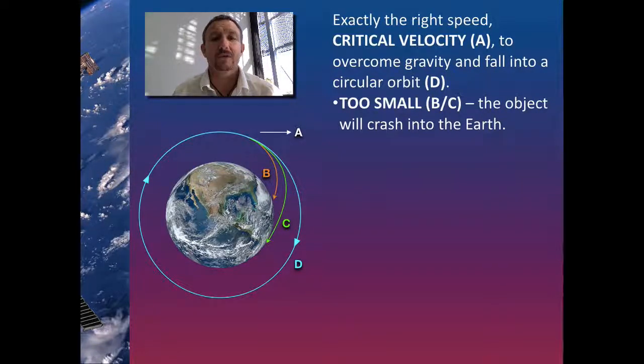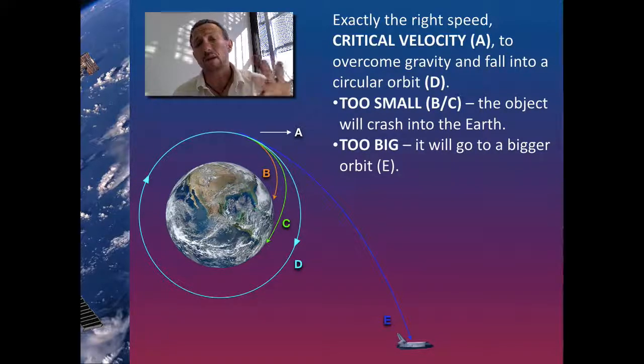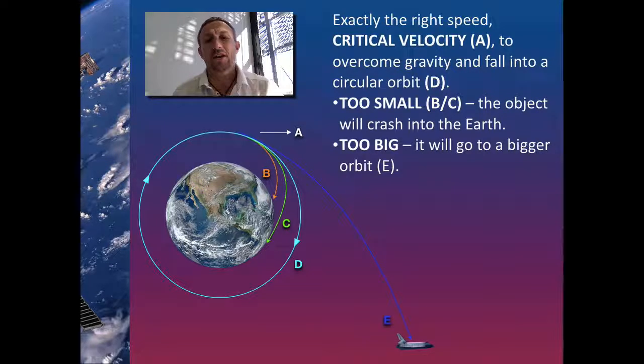Now the problem also worth noting is what happens if we actually give it too much velocity? Well with too much velocity the result is that space shuttle will fly out and leave the orbit of the earth.